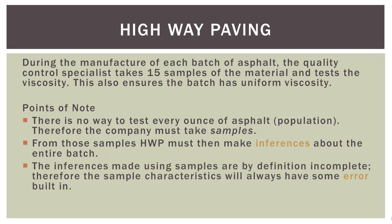The inferences made using samples are by definition incomplete. The 15 samples may or may not be an accurate representation of the entire batch — it's always going to be incomplete. But there are ways to ensure that our sampling techniques are good and valid. Therefore, the sample characteristics will always have some error built in, and that's one of the fundamental ideas in point estimation and in sampling. Whenever you're sampling from a larger population, it's never going to be perfect; there's always going to be some error in that estimation.